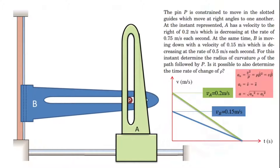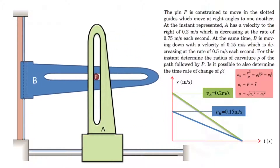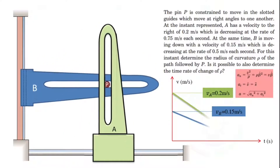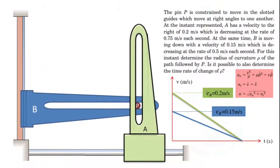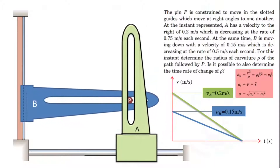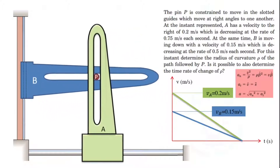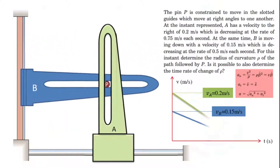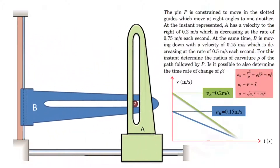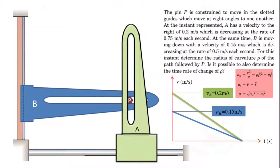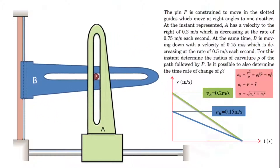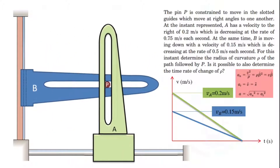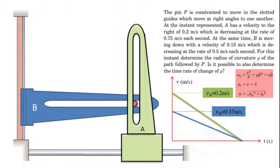At this instant, guide A has a velocity to the right of 0.2 m/s, decreasing at 0.75 m/s². At the same time, B is moving down with a velocity of 0.15 m/s, decreasing at 0.5 m/s². We need to determine the radius of curvature ρ of the path followed by P.